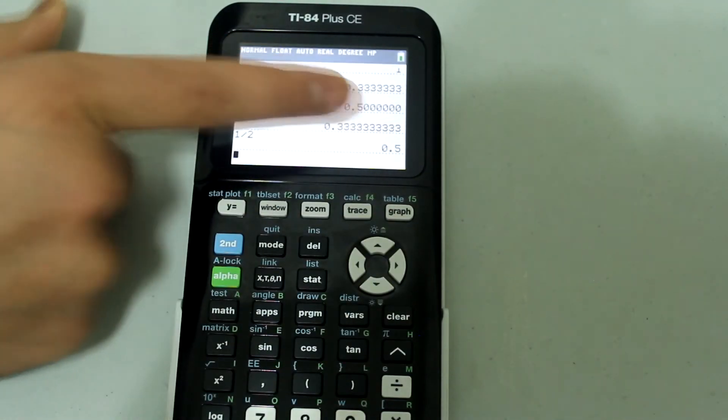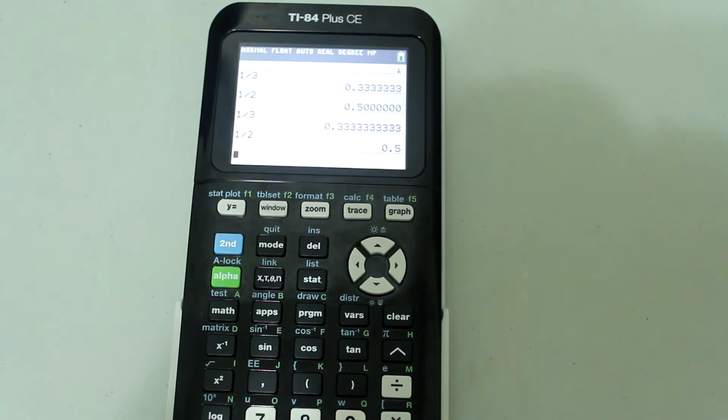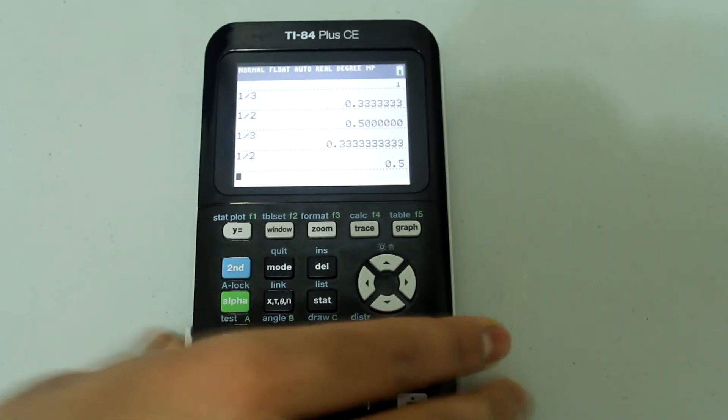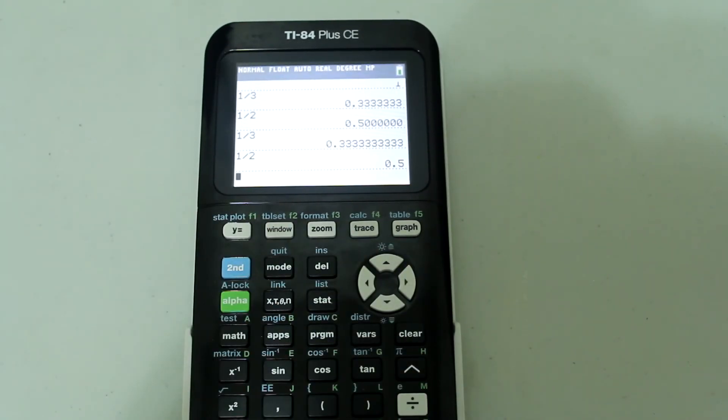So in the float option, the calculator chooses how many decimal places it needs to display, based on what the answer is.